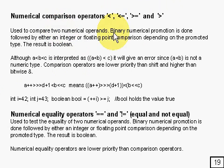What happens, as you might expect, is binary numerical promotion is done followed by either integer or floating point comparison depending on the promoted type.